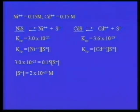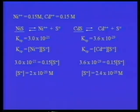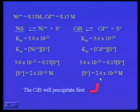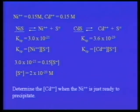Now let's do the same for cadmium. The Ksp is 3.6×10⁻²⁹, with 0.15 molar cadmium, and the sulfide ion concentration comes out to be 2.4×10⁻²⁸. So you can see that cadmium sulfide is going to precipitate first. We start adding sulfide ion carefully until we are just ready to precipitate nickel. Now let's find out how much cadmium is left when the nickel ion is just ready to precipitate.